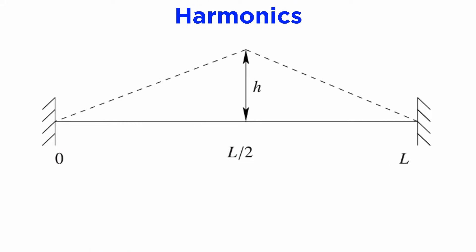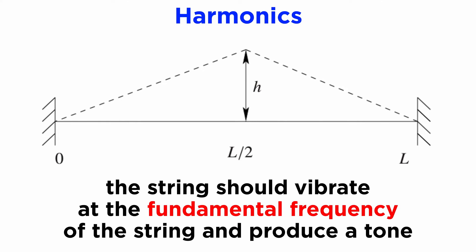Let's see how the idea of harmonics comes in with the wave equation. Suppose that we have a taut guitar string of some fixed length L, and we pull the middle of the string out by some small distance h before letting it go at time t equals zero. Intuitively, the string should vibrate at the fundamental frequency of the string, producing a tone, but let's see what the math can tell us.